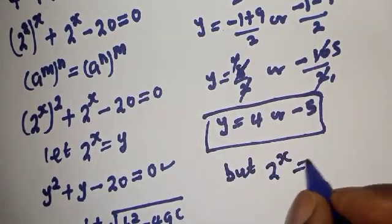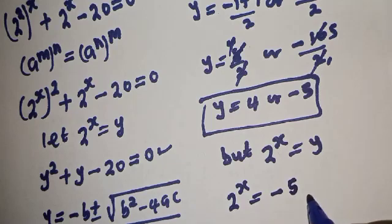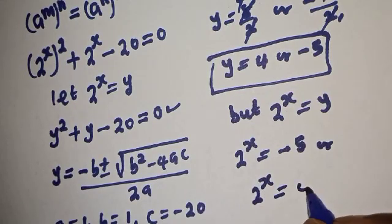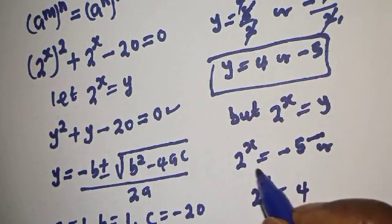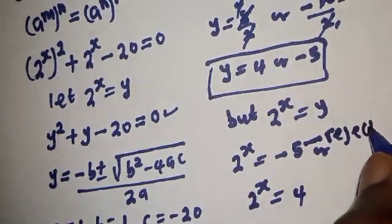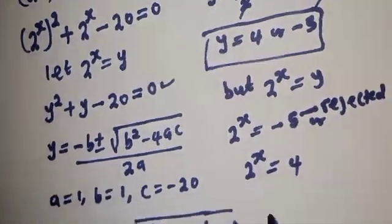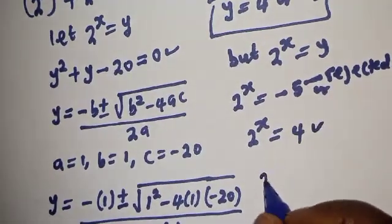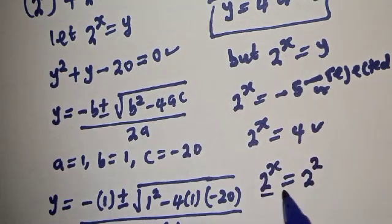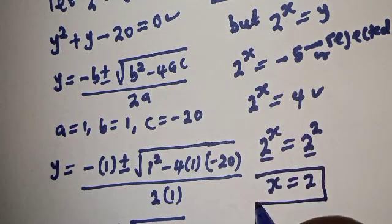But 2 raised to power x is equal to y. Now 2 raised to power x is equal to minus 5, or 2 raised to power x is equal to 4. But 2 raised to power x is always positive, so the negative solution is rejected. The only solution is 2 raised to power x equals 4, which can be written as 2 raised to power 2. We have the same base 2, so x is equal to 2. This is the value of x.